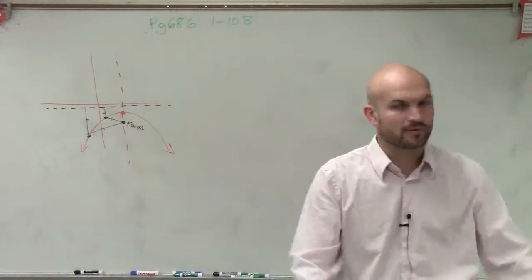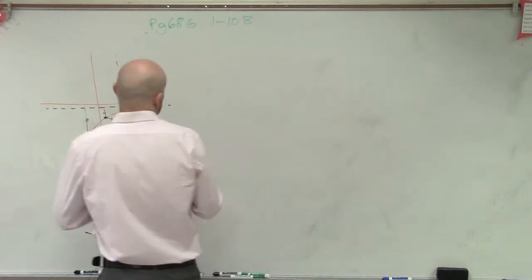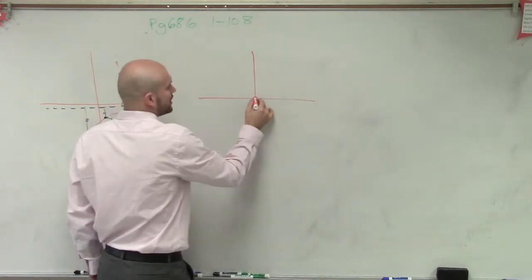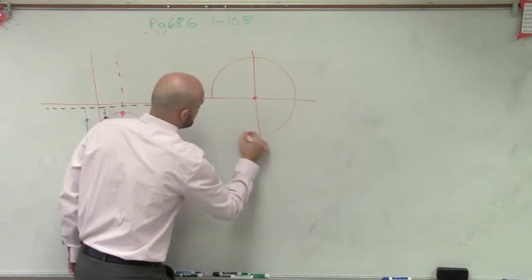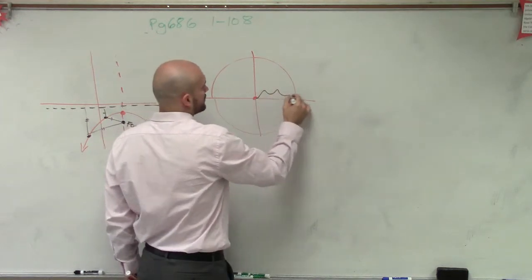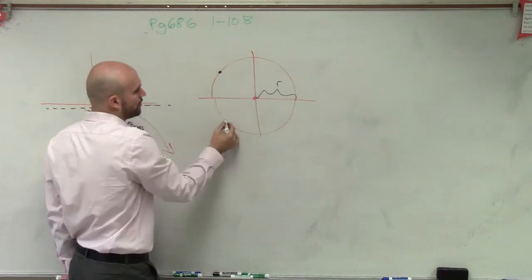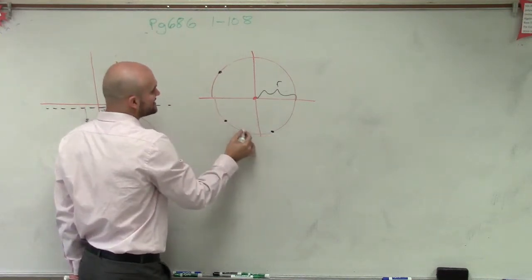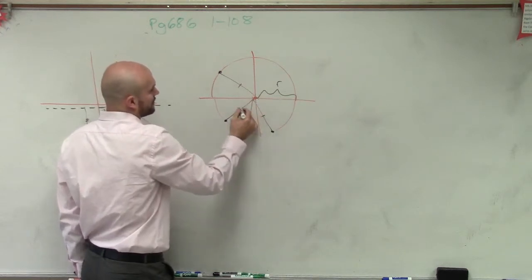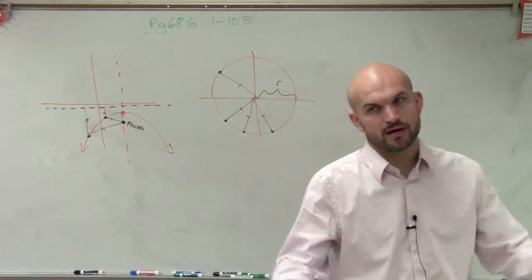Then we moved on to circles. A circle has a center point, and also a radius. The definition of a circle is that no matter what point is on the circle, the distance from that point to the center is always equal — and we knew that value was r.